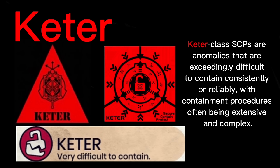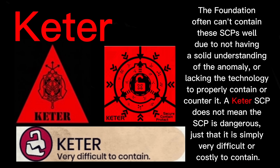Keter class SCPs are anomalies that are exceedingly difficult to contain consistently or reliably, with containment procedures often being extensive and complex. The Foundation often can't contain these SCPs well due to not having a solid understanding of the anomaly, or lacking the technology to properly contain or counter it. A Keter SCP does not mean the SCP is dangerous — just that it is simply very difficult or costly to contain.